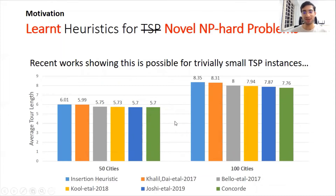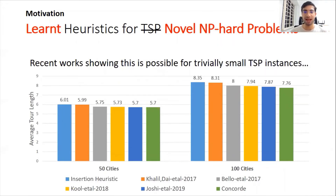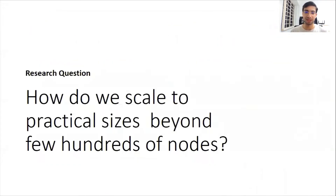This is promising, and it really raises the question: can we now take these learning-driven combinatorial solvers to the real world — to maybe larger-scale TSP or larger-scale problems which we haven't studied before? The research question that motivated our work is: how do we scale to practical sizes, or do these approaches actually scale to practical sizes?